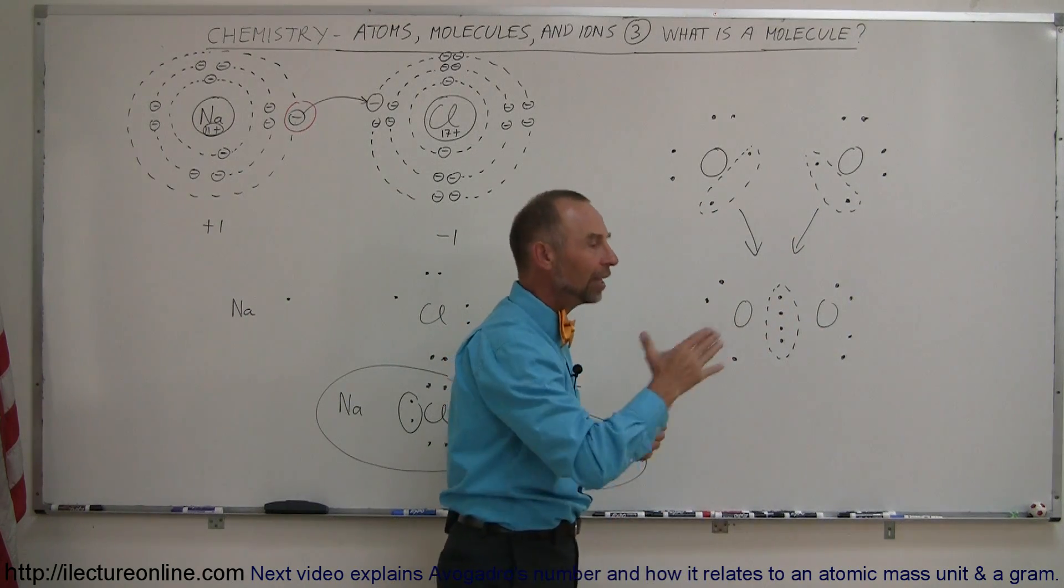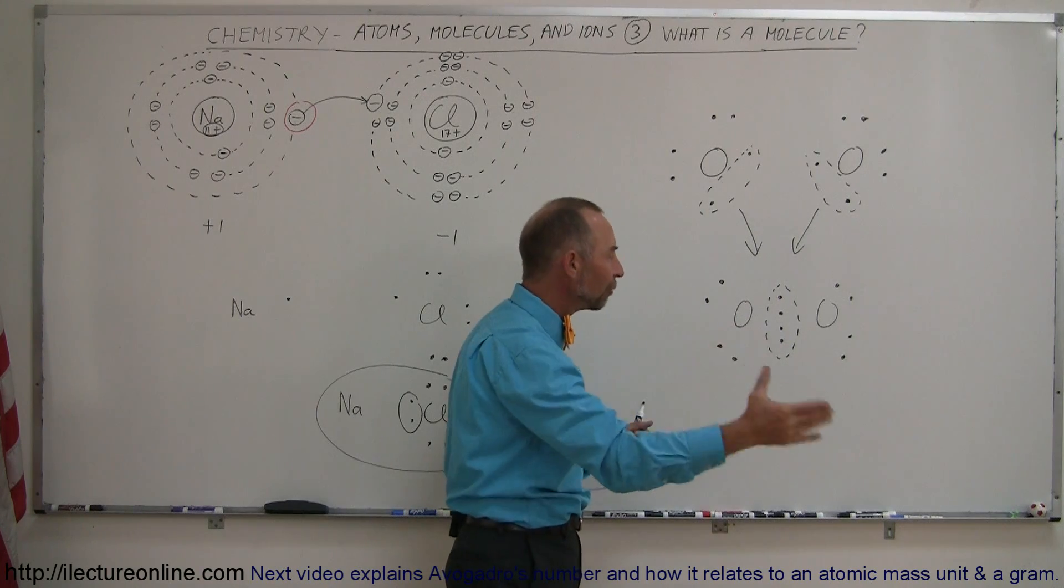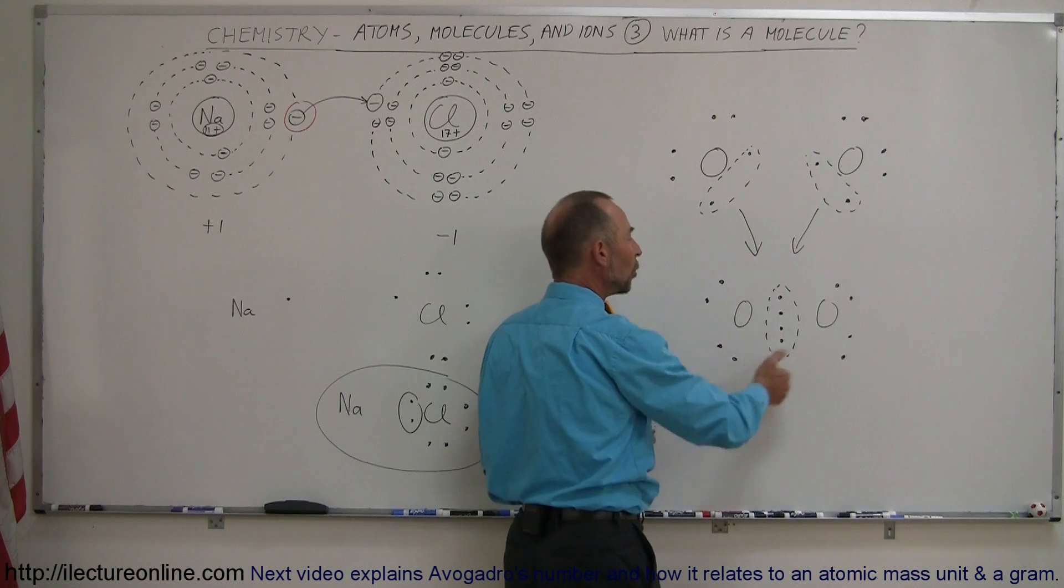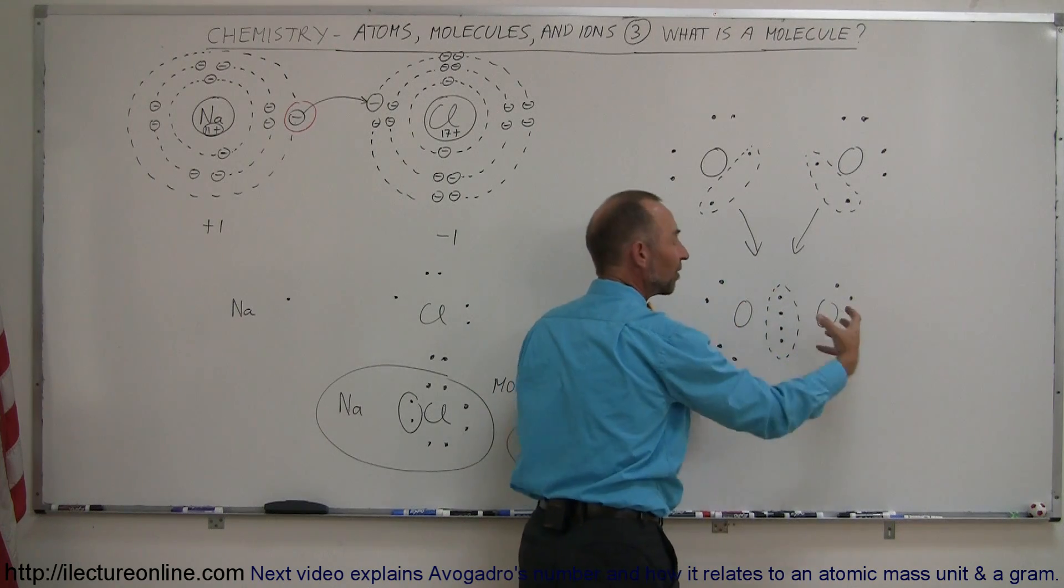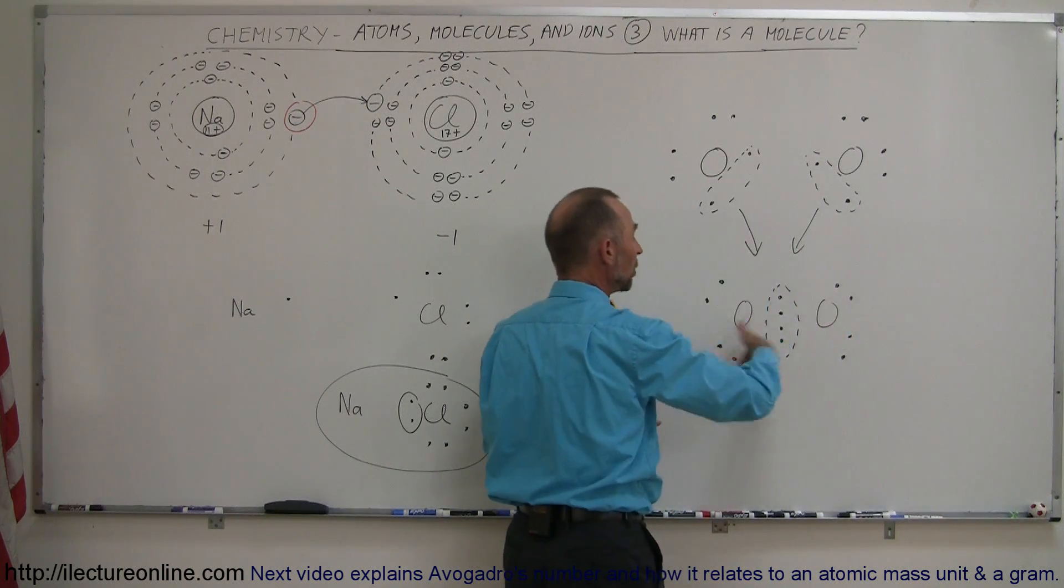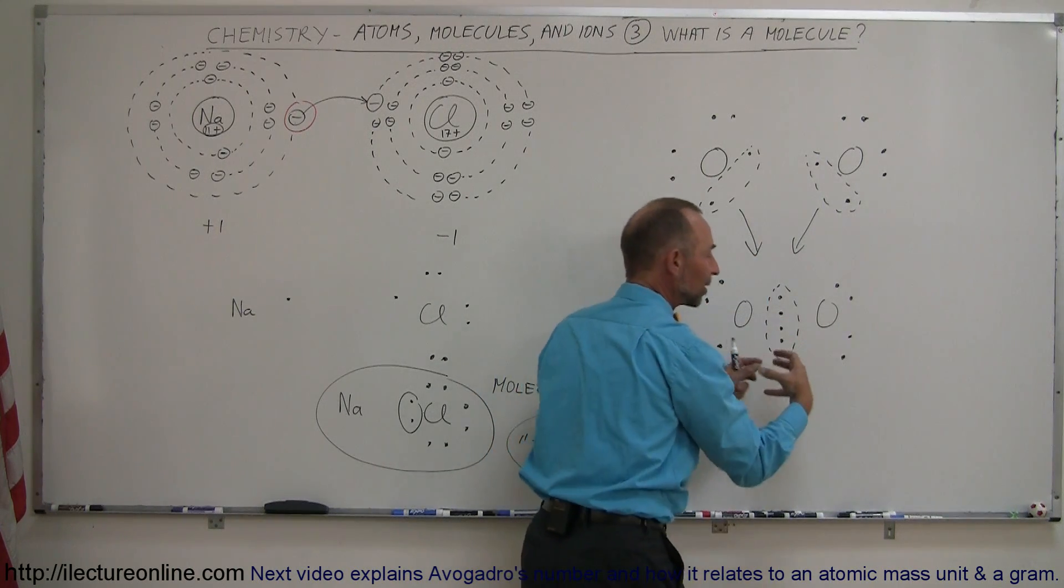So those electrons will go back and forth between the oxygen atoms. When they go to one side, then this will be more negatively charged, and this will be more positively charged, and they'll attract each other. When they move to the other side, this will be more negatively charged, and this one will be more positively charged, and they'll attract each other.